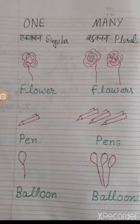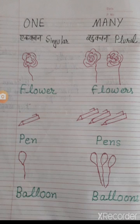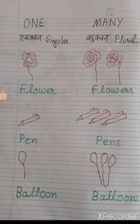आपका topic है one and many। यहाँ आप देखिए। Look at the picture. One means singular और many means plural. Singular का Hindi meaning है एकवचन और plural का Hindi meaning है बहुवचन। एकवचन means एक — कोई भी एक चीज़। बहुवचन means बहुत सारी चीज़ें। Here is a flower.